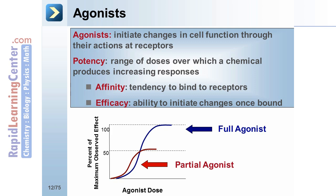It is important to note that while a partial agonist has lower efficacy, its potency — which is the amount needed to produce a given effect — may be higher, lower, or equal to the potency of a full agonist causing the same effect, as potency and efficacy are independent of each other.